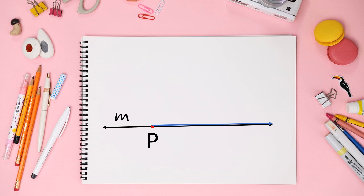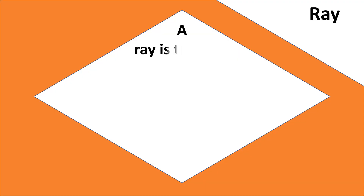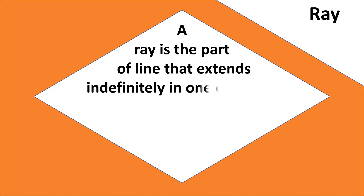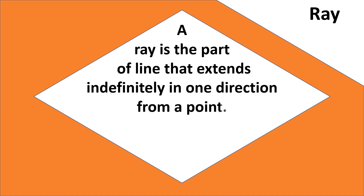The ray can be extended endlessly in one direction. So we can say that a ray is the part of a line that extends indefinitely in one direction from a point.